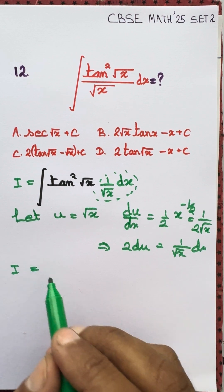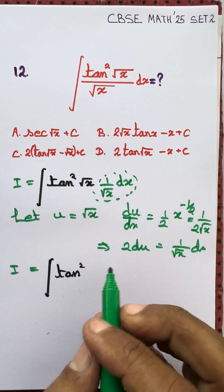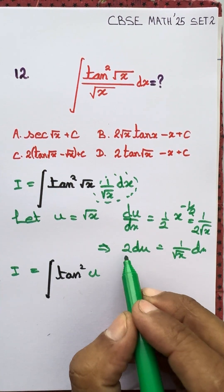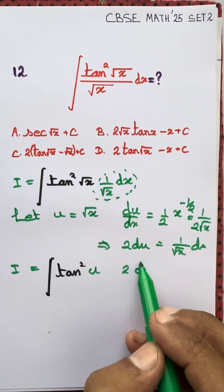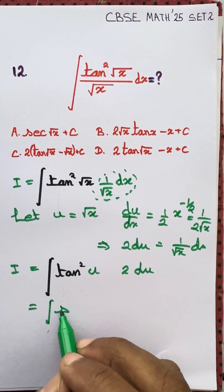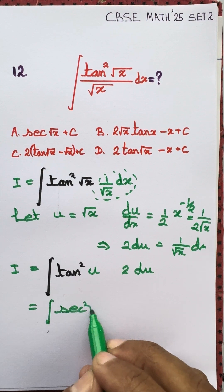We can get I equal to integral of tan squared u. One by root x dx is two du. Two du. Tan squared is sec squared minus one.